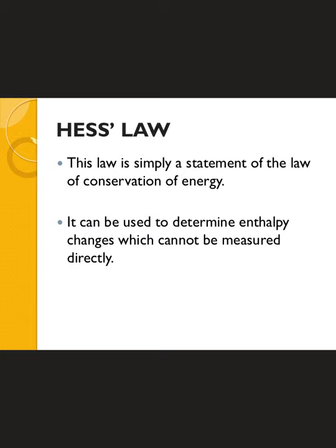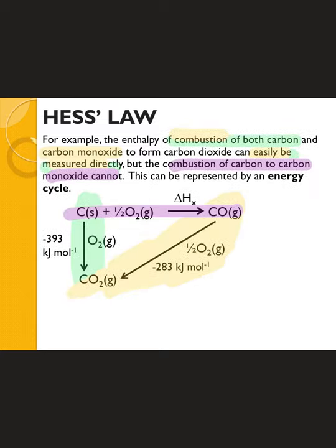Hess's law basically comes from the law of conservation of energy — energy cannot be created or destroyed. One advantage of this approach is that we can work backwards: we aren't always solving for the final equation. Sometimes it's actually a step in the middle that's harder to measure experimentally, and we can calculate it from the other steps.